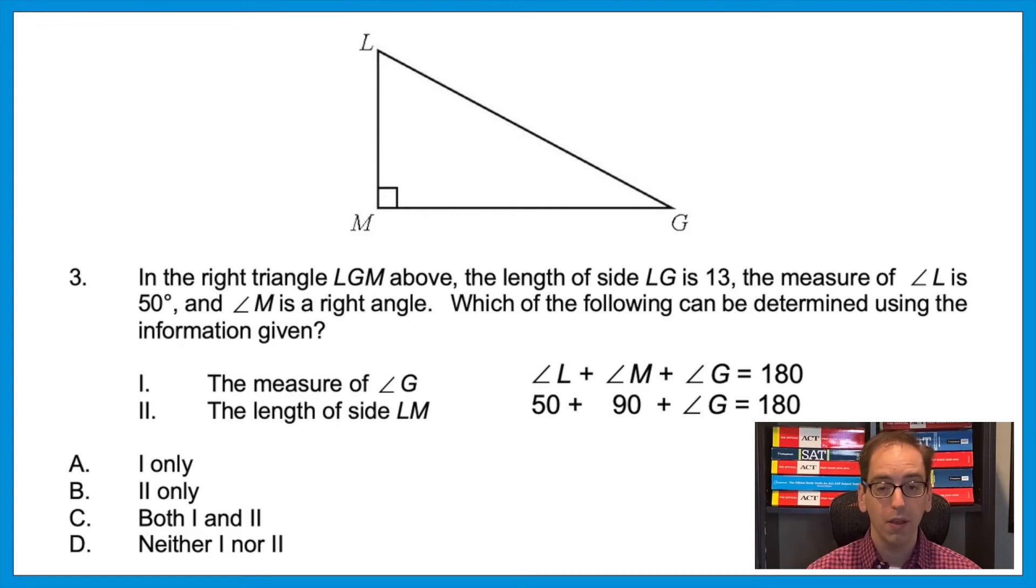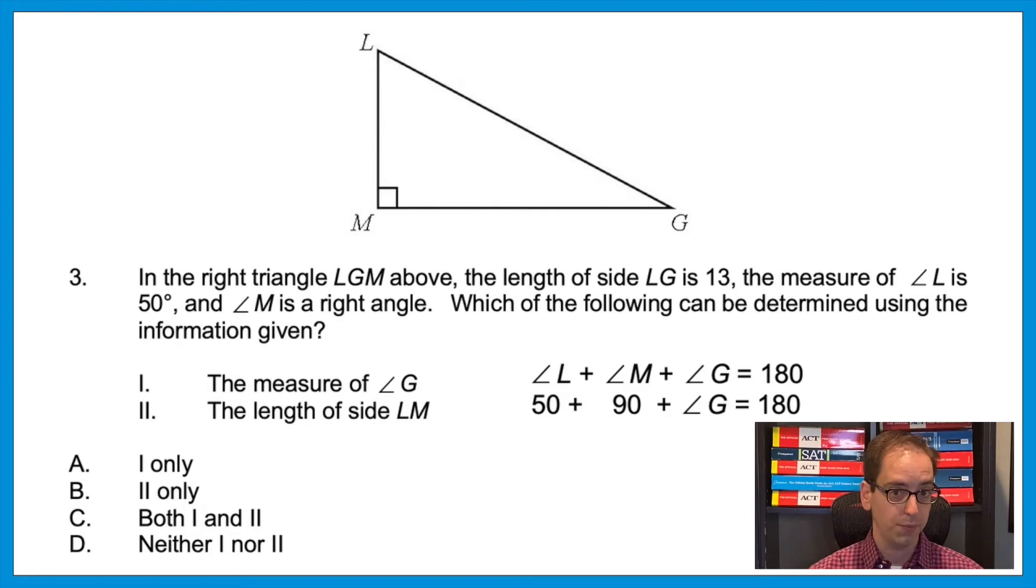Now let's get into statement two: do we have enough information to find the length of side LM? Well, let's look at what they give us. They tell us side LG and angle L. How could this help us find LM? We could use the trig ratios—sine, cosine, or tangent. How? In this triangle, we know that LG is the hypotenuse—it's across from the 90 degree angle—and they're asking if we could find LM. How does LM correspond to the given angle L? It's the adjacent of L. So we're dealing with an angle L, the hypotenuse, and the adjacent. That means we could use the cosine ratio.